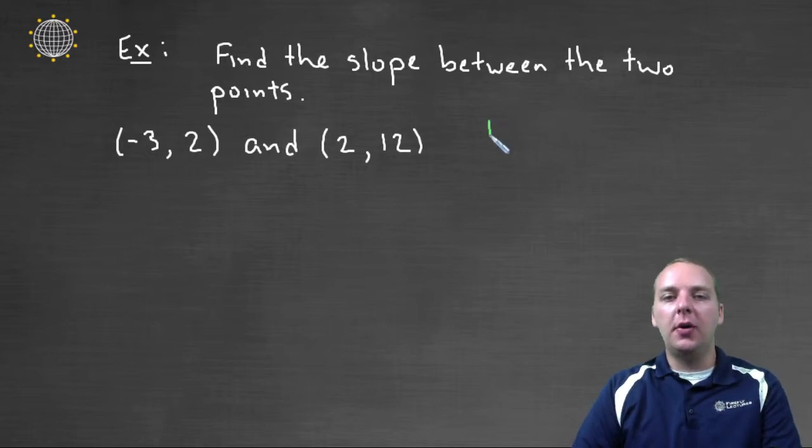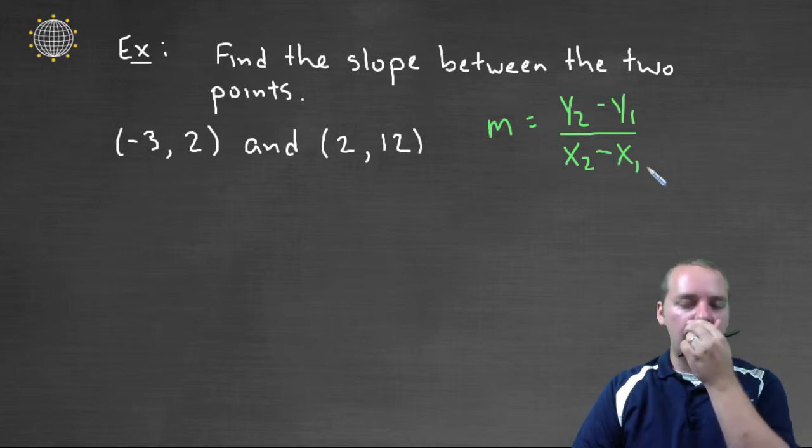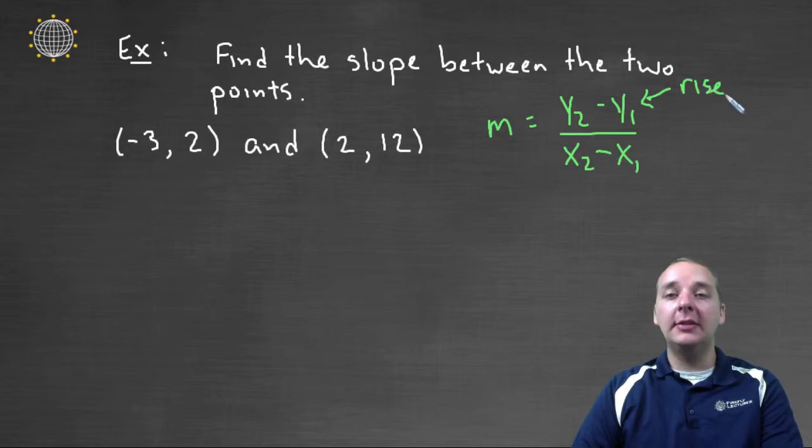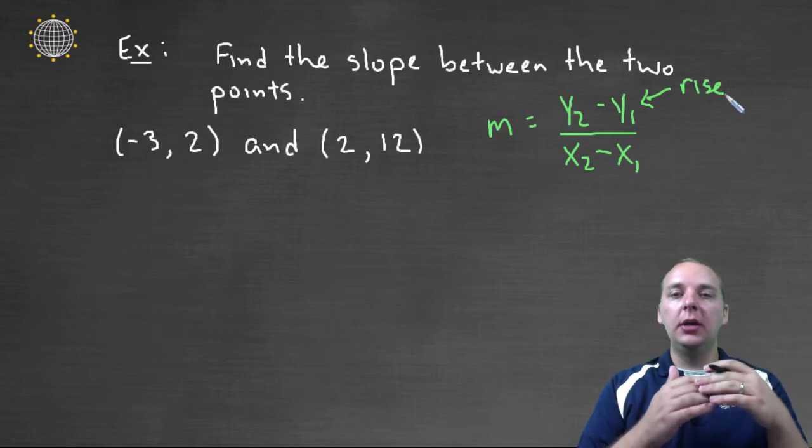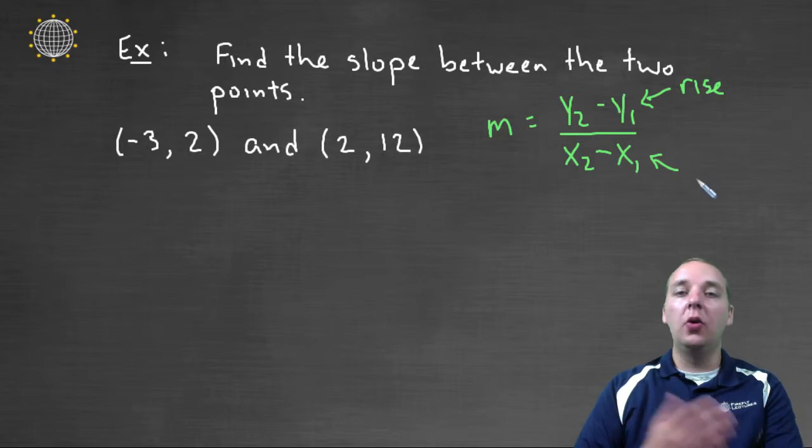So hopefully we recall that M is usually the letter we use to represent slope, and it's equal to y-two minus y-one divided by x-two minus x-one. If that's something that you don't already have committed to memory, put it on a flash card or do something to memorize that formula. Basically what the y-two minus y-one is doing is telling you the rise, the y-axis rise between the two points, and the x-two minus x-one is telling you the horizontal run between those two points.